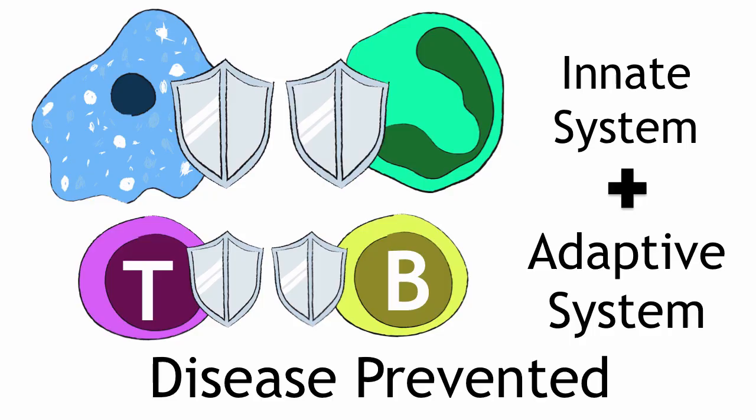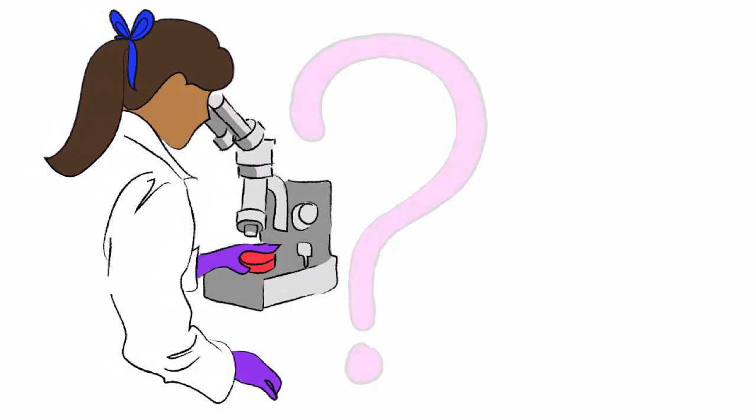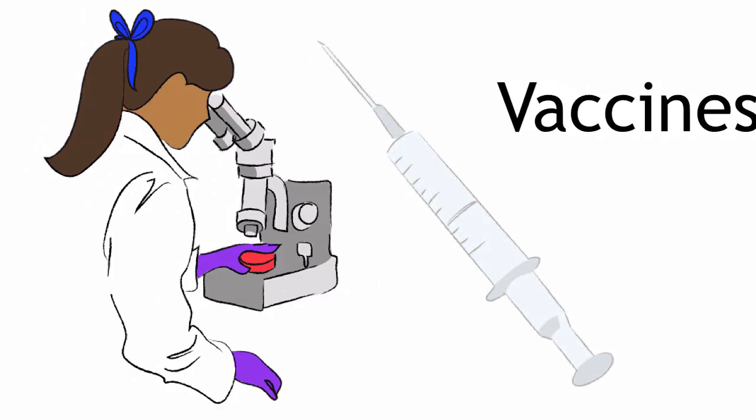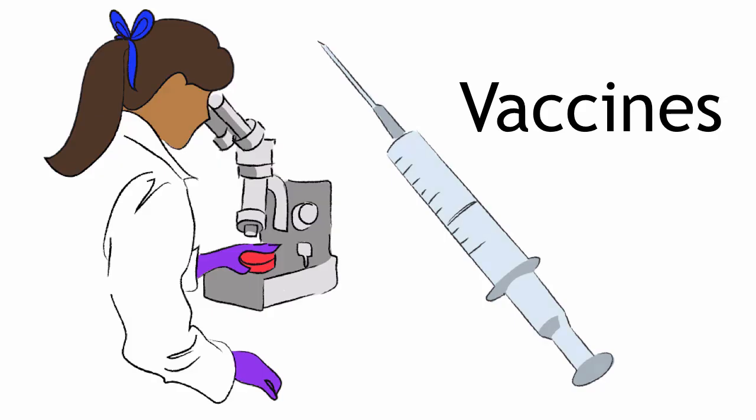There is still much that we do not understand about how the immune system functions. Scientists are doing research to understand this more precisely, and this knowledge can be used, for example, in the development of new and better vaccines.